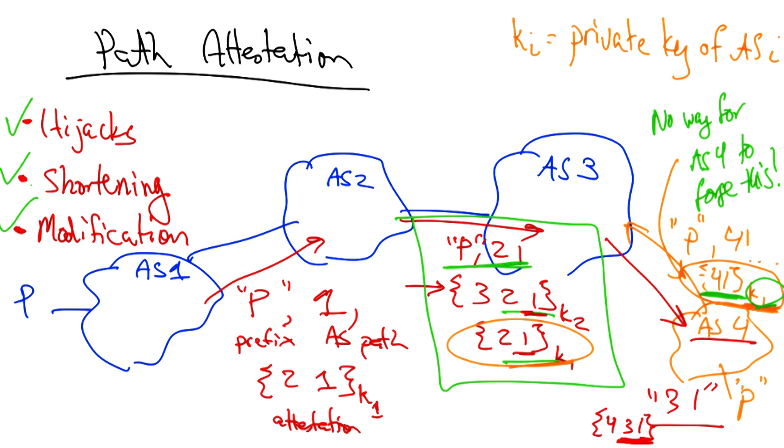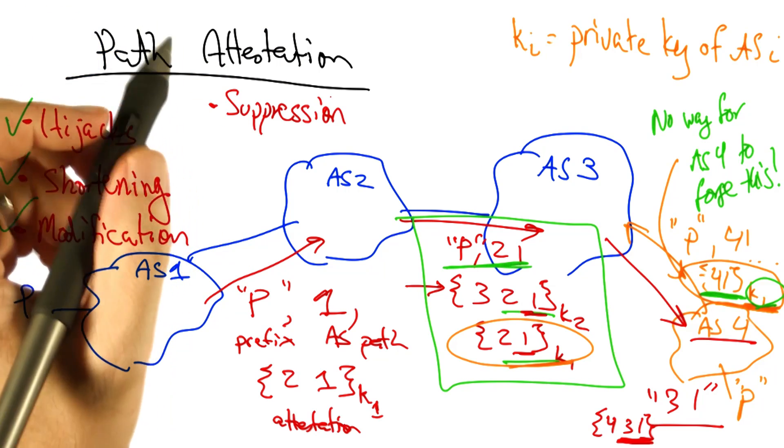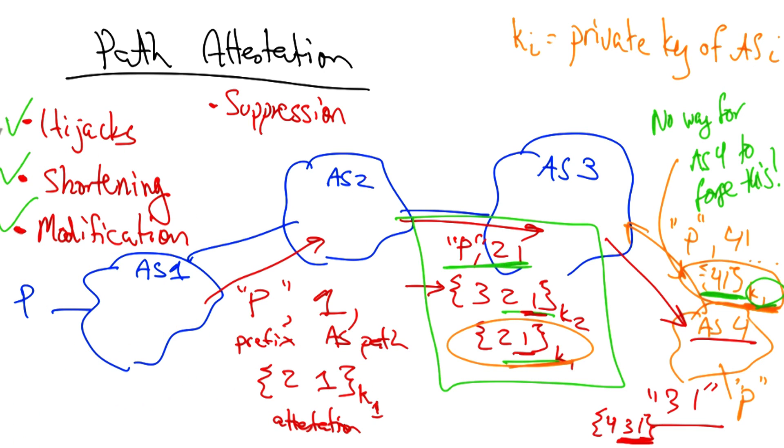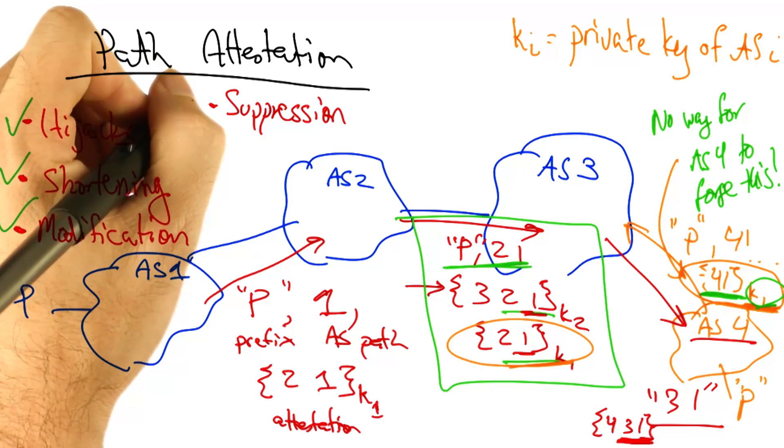However, there are certain attacks that path attestations cannot defend against. So, if an AS fails to advertise a route, or a route withdrawal, there's no way for the path attestation, or BGP sec, to prevent from that kind of attack.